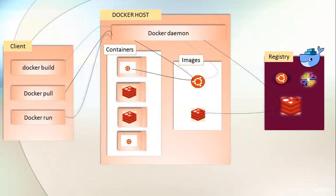When you start the Docker daemon, by default the Docker client also gets started, and you can use that Docker client to interact with the Docker daemon. The Docker daemon has two major responsibilities: to manage containers and images. In the diagram we can see that there is an Ubuntu image in the image section, and the Docker daemon uses that image to create a container.